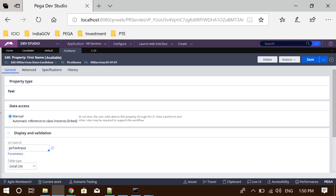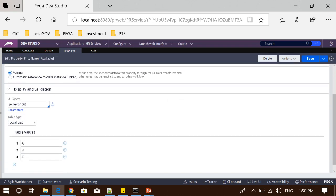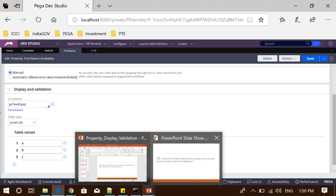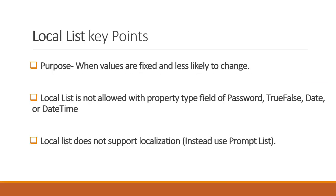There is another value in the table type which is local list, which is very basic. We can select this value and enter some table values which will be shown in the UI. The key points behind local list: first, the purpose is to use it when the values are fixed and the list of values is small and very less likely to change. Second, it will not be allowed with property of type password, rule false, date, or date-time. Third, local list does not support localization because there is no localization wizard that can operate on local list to generate reusable rules.